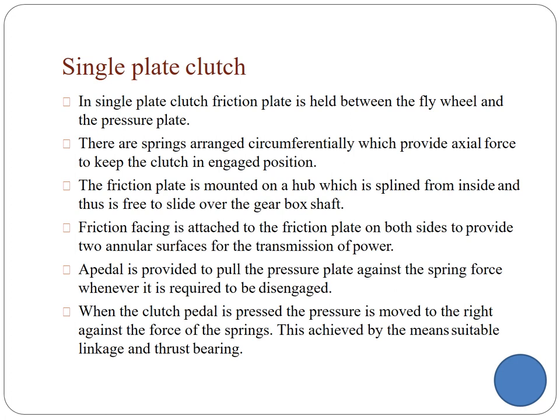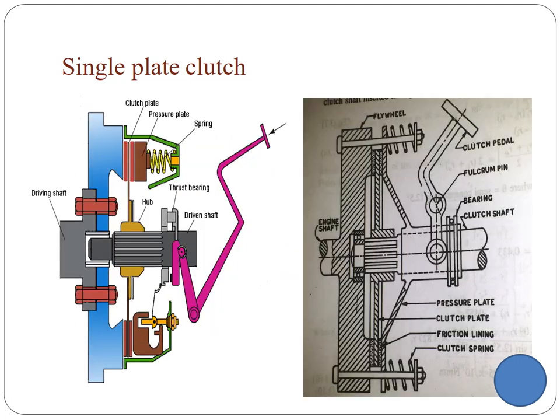What is the single plate clutch? In a single plate clutch, a frictional plate is placed between the flywheel and the pressure plate. Springs are attached circumferentially to provide axial force to keep the clutch in the engaged position. The frictional plate is mounted, splined on the hub, so the clutch shaft can move freely inside and outside. The frictional plate is covered with frictional lining on both sides to transmit power faster.